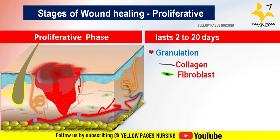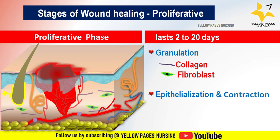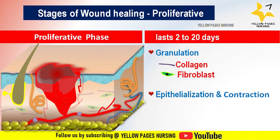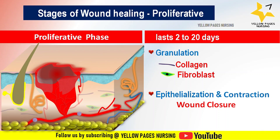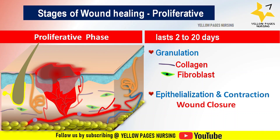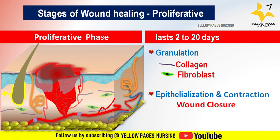Epithelialization and wound contraction are interrelated processes that work together to facilitate wound closure. In contraction, wound edges gradually pull closer together, reducing the wound size — this is driven by specialized cells called myofibroblasts. In epithelialization, epithelial cells at the wound edges multiply and migrate to cover the wound surface.